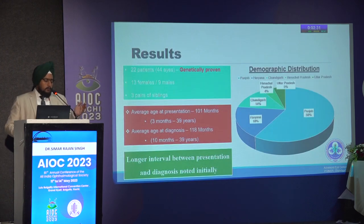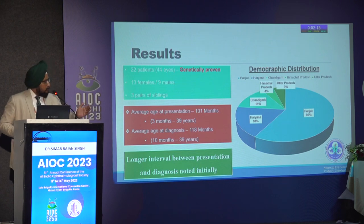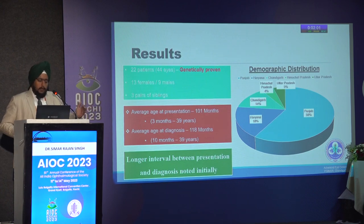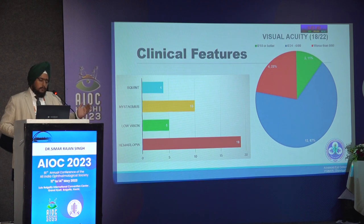Overall results: 22 patients (44 eyes) of genetically proven achromatopsia — 13 females, 9 males, 3 pairs of siblings. Average age of presentation is around 7 to 8 years; the youngest diagnosed is 3 months. Since recognizing the signs, patients are being picked up earlier. Hemeralopia and nystagmus were the most common features; majority of 18 children who could have visual acuity recorded had moderate visual loss. The genetic profile was completely reversed from Western reports: 86% presented with CNGA3 mutation compared to CNGB3 reported in the West — a major difference.